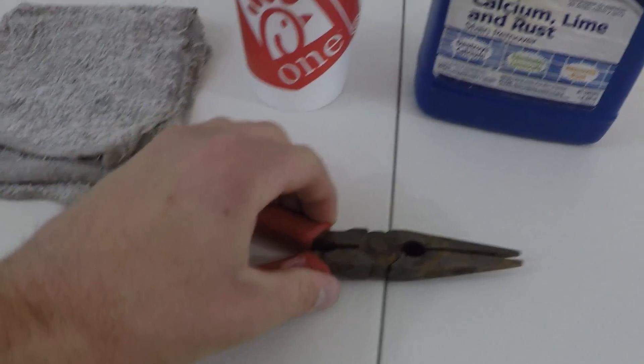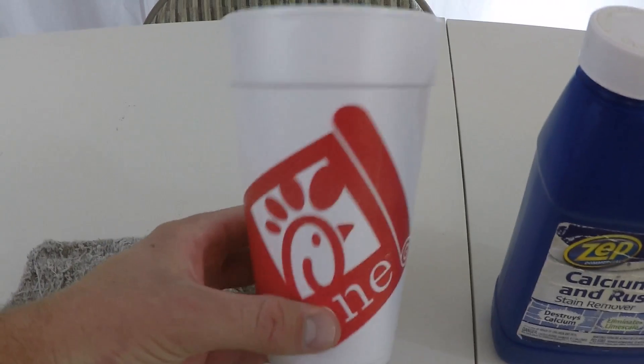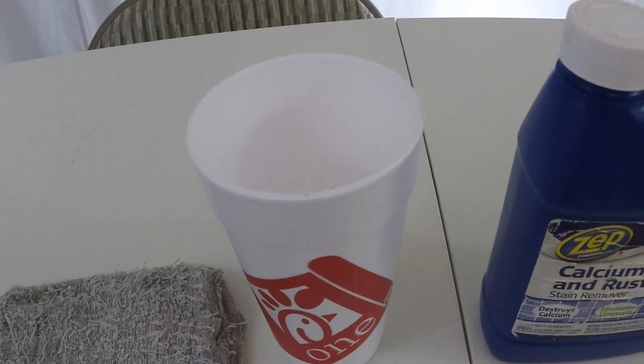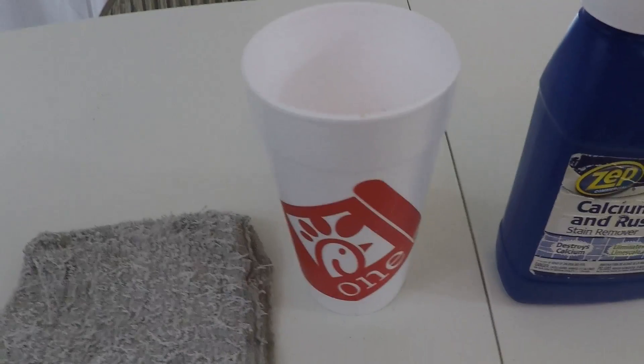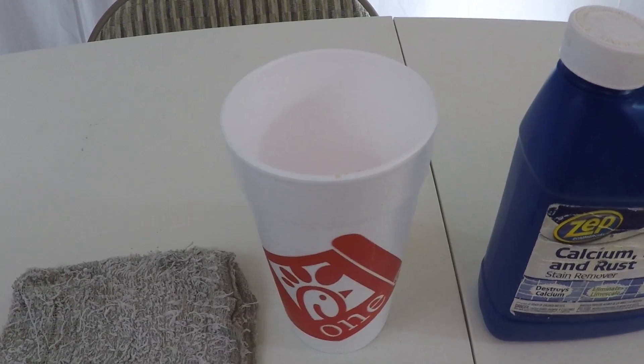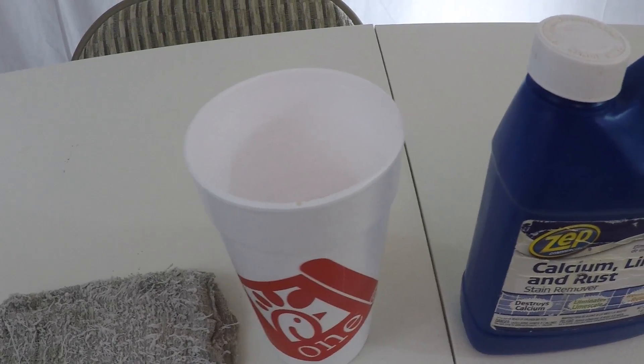But I've discovered a method for fixing that, no problem. The first thing you do is get a cup like this, something that you can throw away. Do not use a glass or something you're going to be drinking out of because the chemical that you're going to put in there, you just can't be good putting this chemical in a glass and then turning around and drinking out of the glass, even if you did run it through the dishwasher.